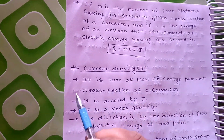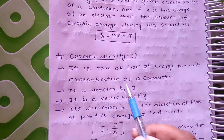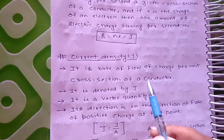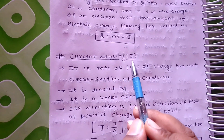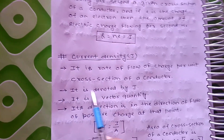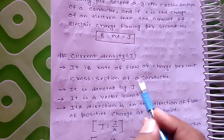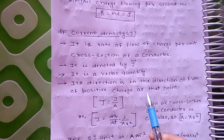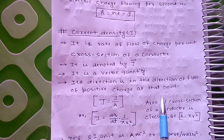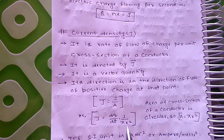Current density होता है जिसे हम J से denote करते हैं। Current density क्या है? It is the rate of flow of charge per unit cross section of a conductor. मान लीजिए कोई conductor है, उसके unit area से जितना भी charge flow करेगा वही हमारा current density कहलाएगा। इसे J से denote करते हैं। It is a vector quantity — electric current a scalar quantity है और current density vector quantity है, यह हमको याद रखना पड़ेगा। Its direction is in the direction of flow of positive charge at that point.